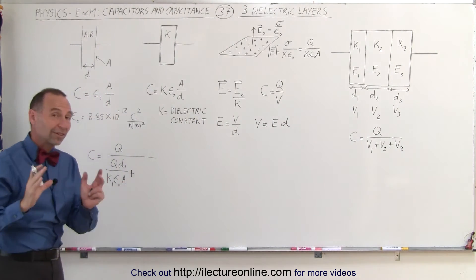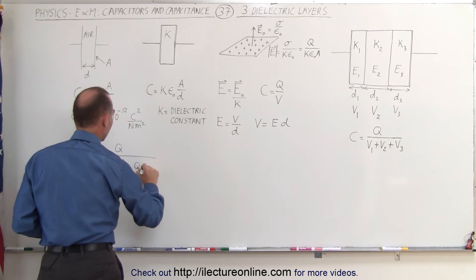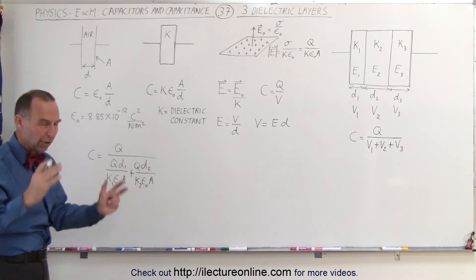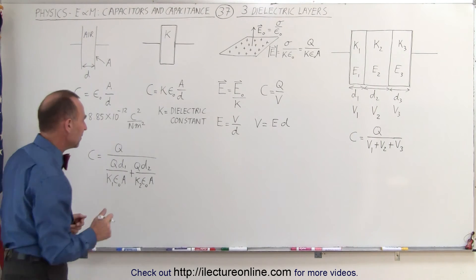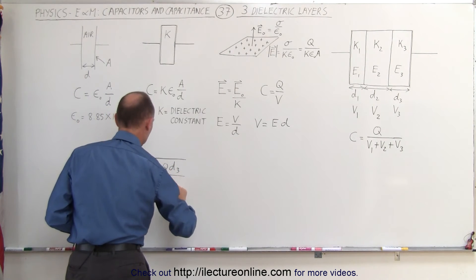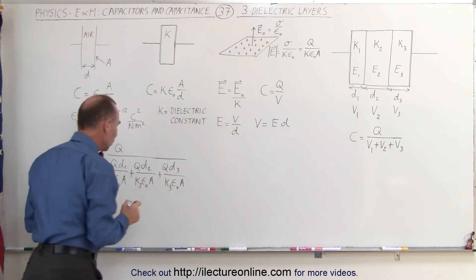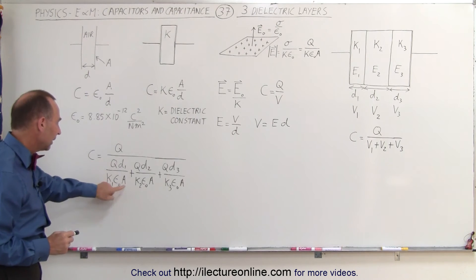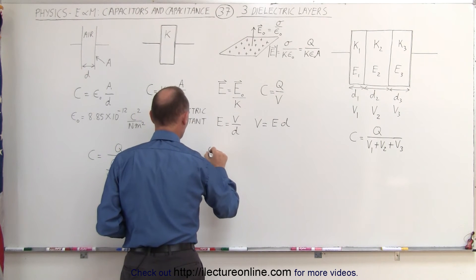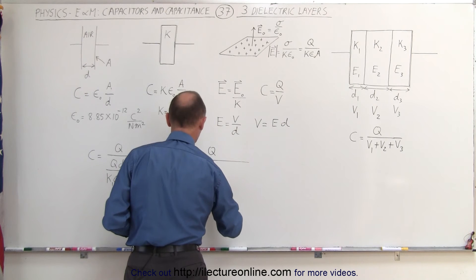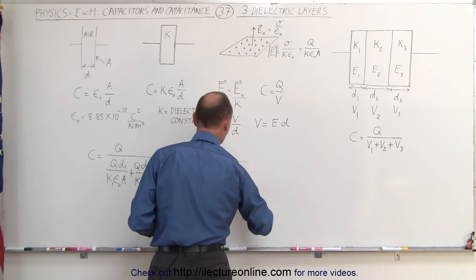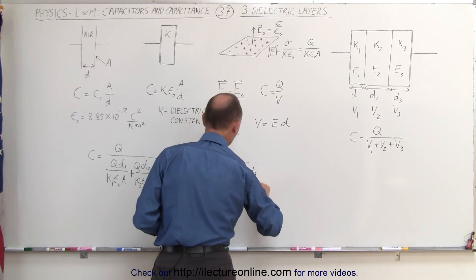We add that to the voltage across the second layer, which is done exactly the same way: the charge on the plates times d2 divided by k2 epsilon sub nought times a. Notice that the area of each plate is the same. Then we add the voltage across the third layer, which is q times d3 divided by k3 epsilon sub nought times a. Notice in the denominator we can factor out q, epsilon sub nought, and a for all three terms. This becomes equal to the charge divided by q over epsilon sub nought times a, times the quantity d1 over k1 plus d2 over k2 plus d3 over k3.